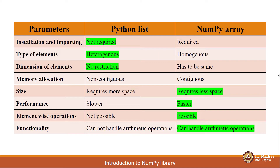Second point, type of elements. Python list can store elements of any type in a single list — we can have integer, character, float, another list, a dictionary, tuple, set, string, or any kind of data element inside a single list. Whereas for NumPy arrays there is a restriction: every element in the NumPy array must be of the same type. We have to use it either only for integers or only for strings, and we cannot mix and match them together in a single array.